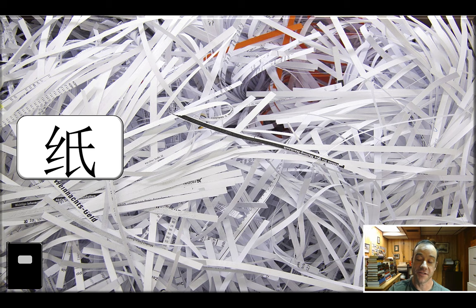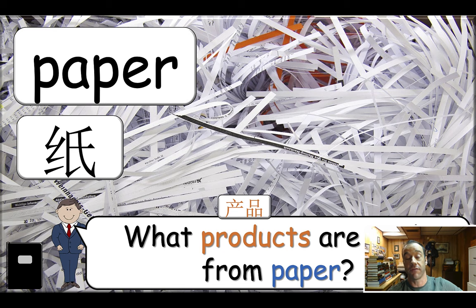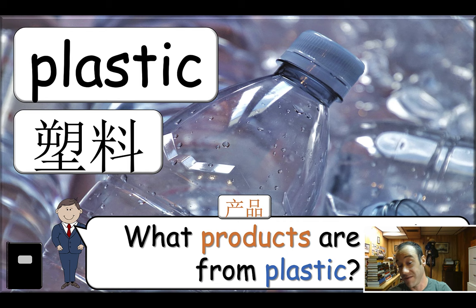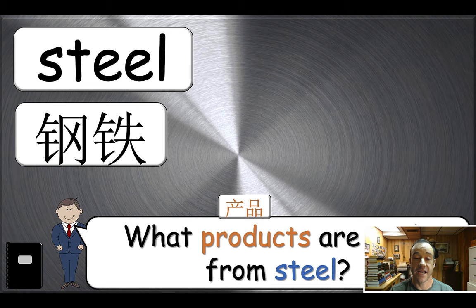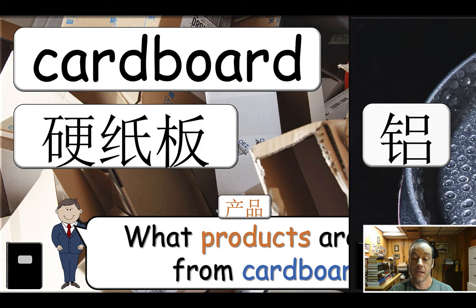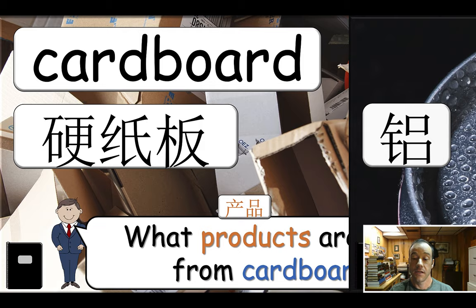Let's go through each one. Some are very easy — students can raise their hand and tell you 'paper.' What products are made from paper? They can brainstorm and you can write them on the board. Next one right next to paper — see if they know it. Plastic. What products are made from plastic? They're going to say water bottle. Then we have steel — same drill, have them tell you what products are made from steel. Next one is glass. Then we have cardboard. And then we have aluminum — I'm teaching the American pronunciation here. If someone says 'aluminium,' you can say yes, that's the British way.